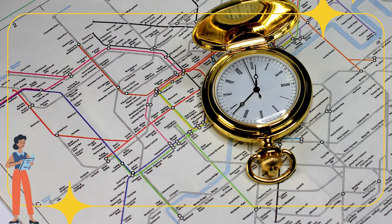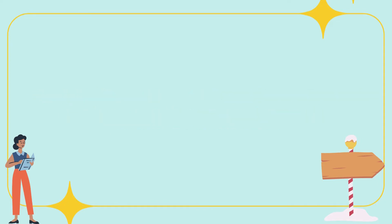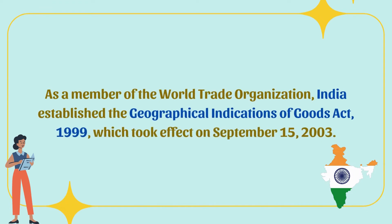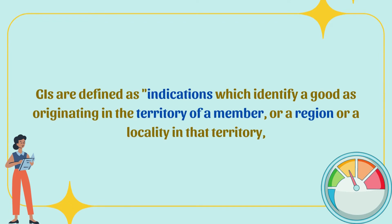Geographical Indications: a geographical indication is a designation or sign used on certain products that correspond to a certain geographical place or origin. As a member of the World Trade Organization, India established the Geographical Indications of Goods Act 1999, which took effect on September 15, 2003.